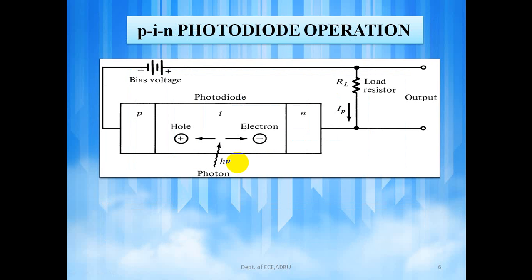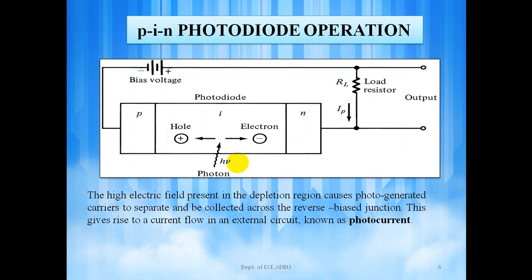Now looking into the operation of a PIN photodiode. The diffusion component of a PIN photodiode can be reduced by decreasing the width of the P side and N side and increasing the width of the depletion layer. To achieve this, a layer of semiconductor, which is very lightly doped, almost intrinsic, is inserted at the PIN junction. Such a structure is called as PIN photodiode.